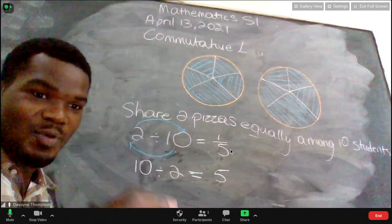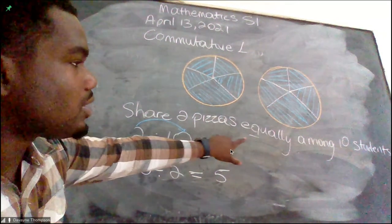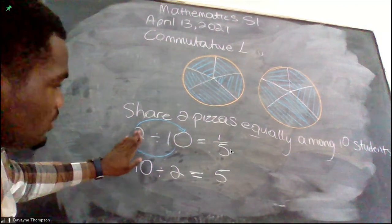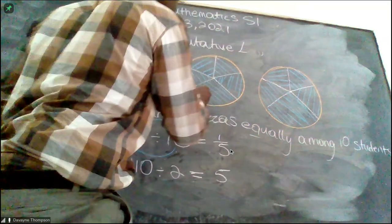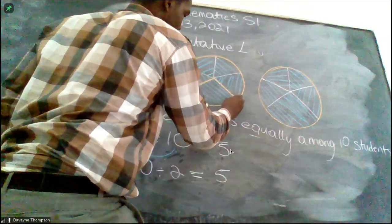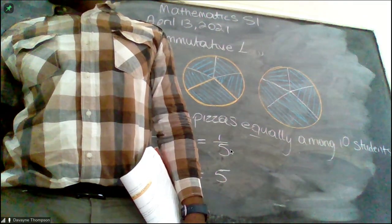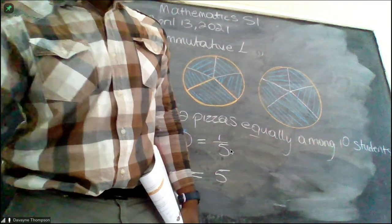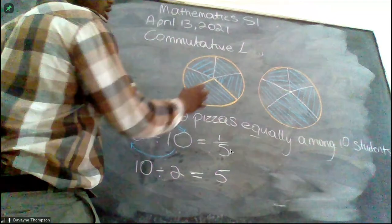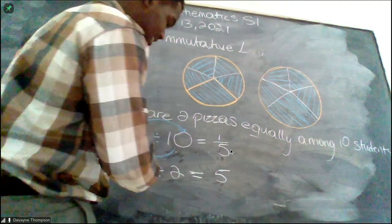Let's continue. For those who are watching it virtually, online. As I said, sharing two pizzas equally among ten students would be two divided by ten which is one-fifth. That means one person would have gotten a slice. This slice would be for one person.